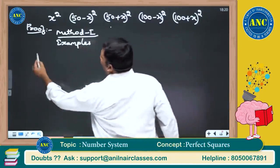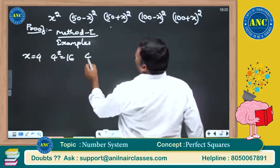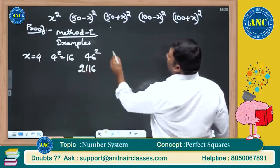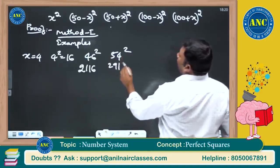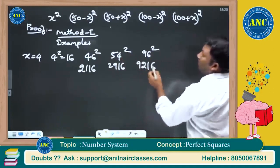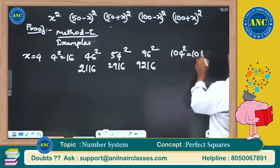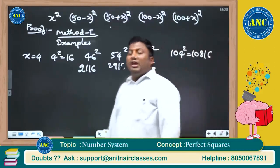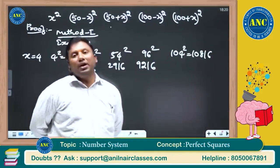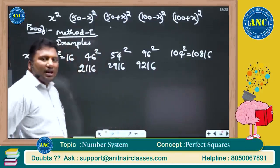Let me take x = 4. 4² = 16. (50 - 4) = 46², which is 2116. 54² = 2916. (100 - 4) = 96² = 9216. 104² = 10816. So for (50±4)² and (100±4)², the last two digits are the same — 16 — in all cases.